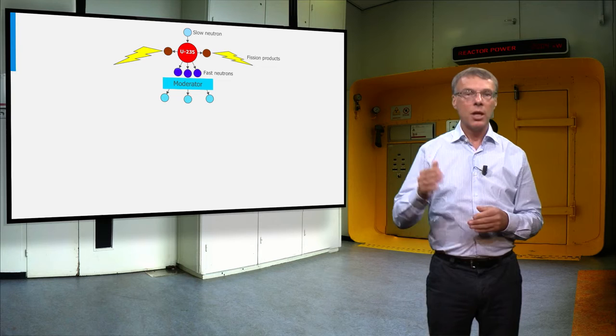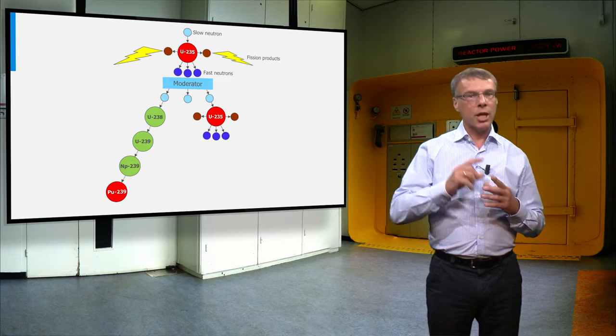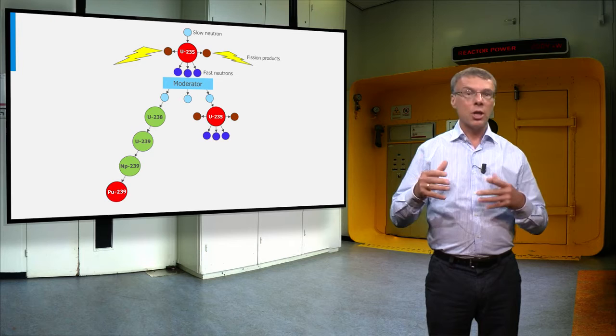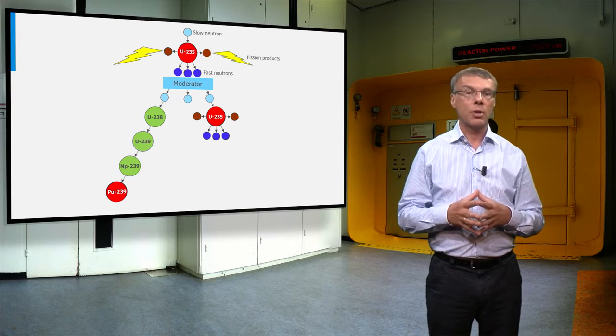The slow neutrons after moderation can easily be absorbed by U-235. Of course, in each generation we need an equal amount of fission reactions for constant power production. So the other neutrons will have to leak away or need to be absorbed, for example by the control rods, or by the uranium-238 in the fuel.